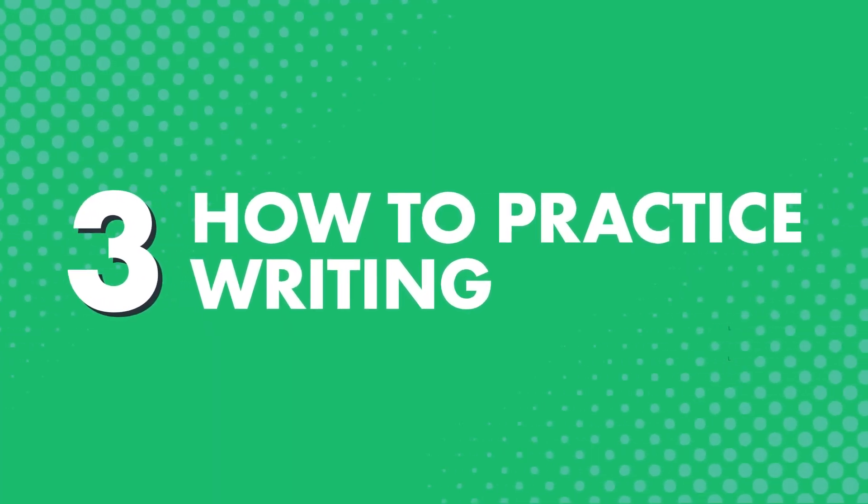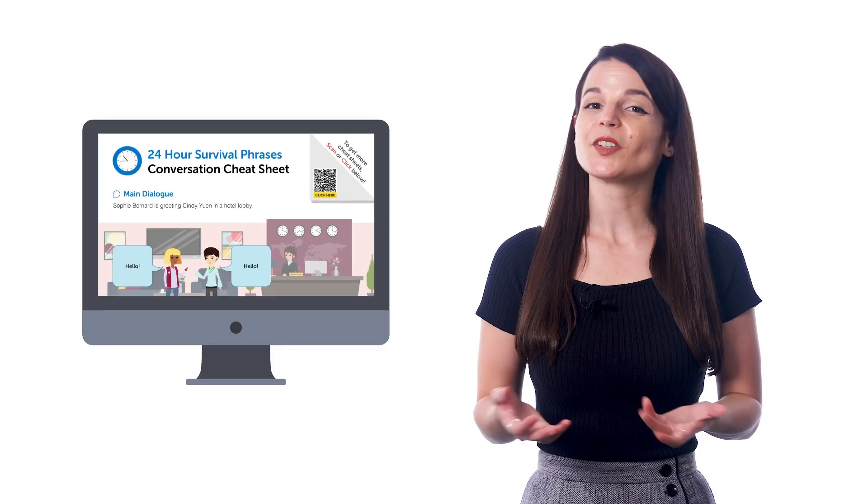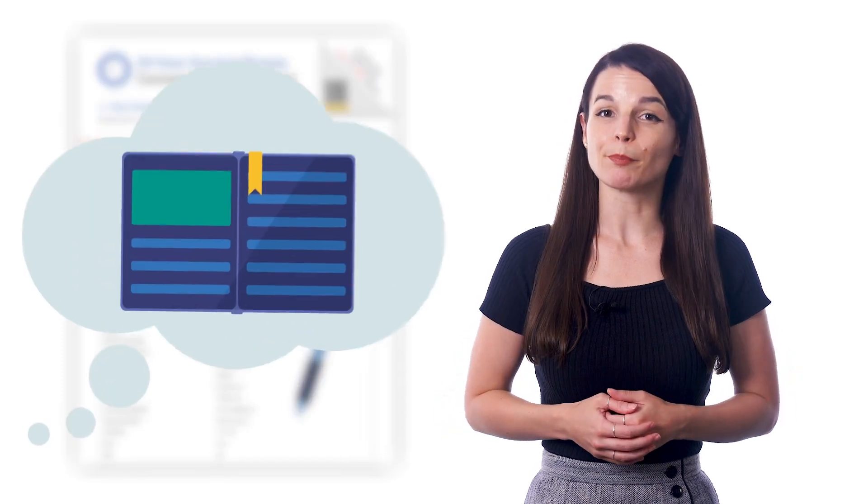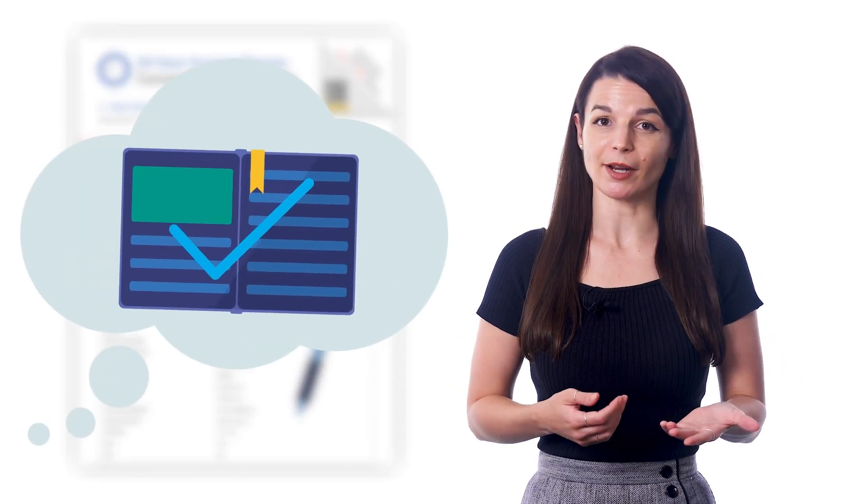3. How to practice writing. The easiest way to practice writing is to simply copy out the words on the cheat sheet into a notebook. You can also print out the cheat sheets and write on them directly. And as a bonus, you get to remember all of the words and phrases better.